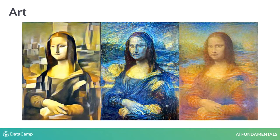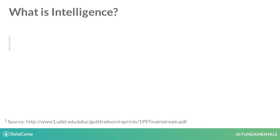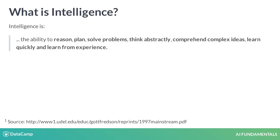Let's start with the core concepts. Let's first define intelligence as such. One of the widely accepted formulations defines intelligence as the ability to reason, plan, solve problems, think abstractly, comprehend complex ideas, learn quickly, and learn from experience. So, AI systems are systems that possess these capabilities.